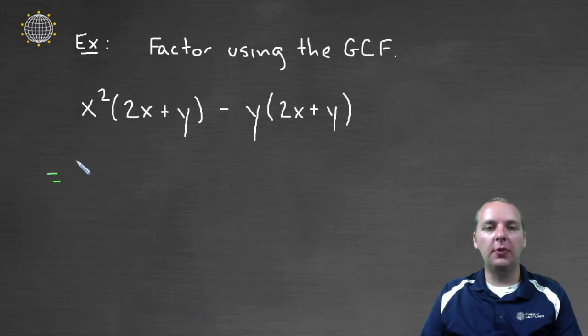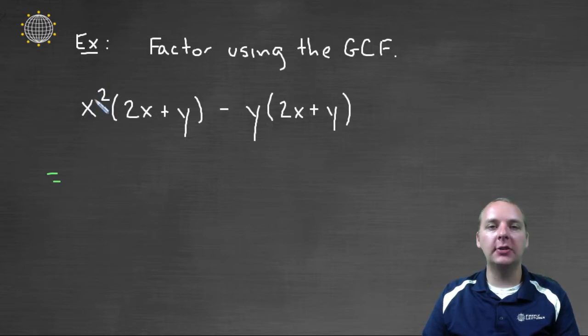So when I'm looking for common factors, I'm looking for any factor that both of these guys have in common. Now, the first term here has an x, in fact it has an x squared, but the second term here doesn't have just a factor of x. Yes, it's got an x as far as the 2x plus y, but the 2x plus y, the whole thing is a factor of the second term, not just the x.